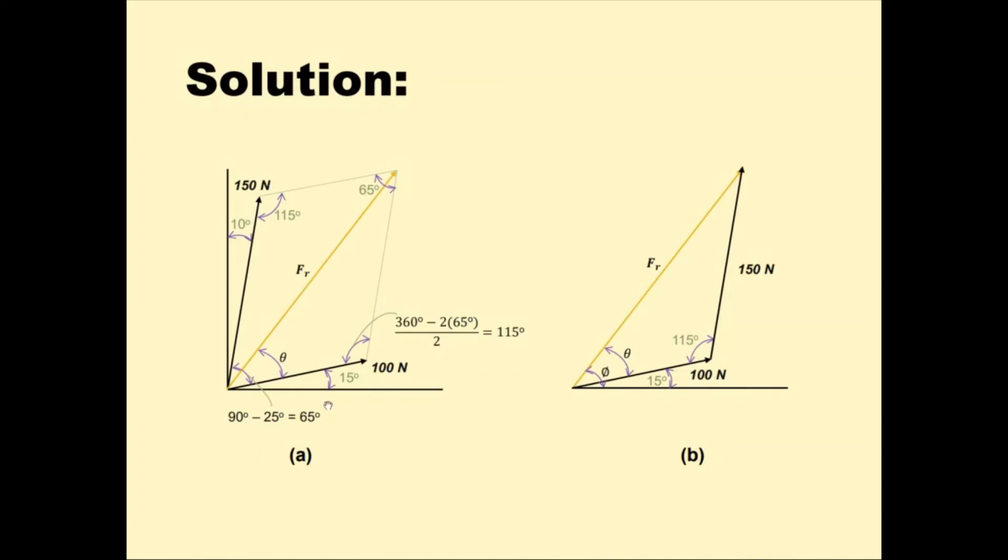To get 65 degrees, we subtract from 90 the sum of 15 degrees and 10 degrees. Automatically, the value of this angle is also 65 degrees. For this side and this side, 360 degrees total minus 2 multiplied by 65, these two, over 2. The answer is 115 degrees.